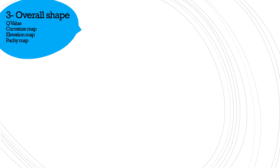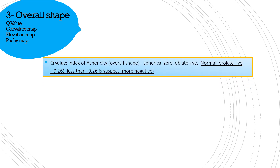The overall shape of the cornea is studied in four different ways: the Q value, curvature maps, elevation maps, and pachymetry maps. Let's see them one by one. First of all, the Q value — it tells us the overall shape of the cornea, whether it's a prolate normal cornea, slightly hyperprolate, or oblate.